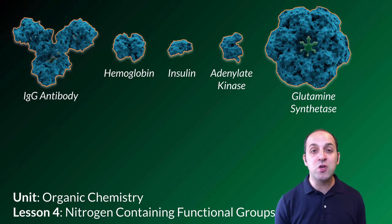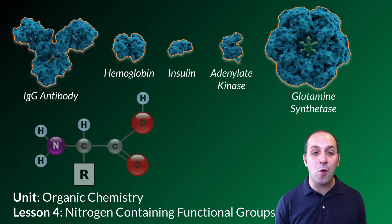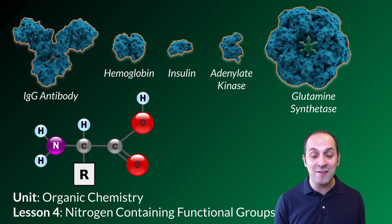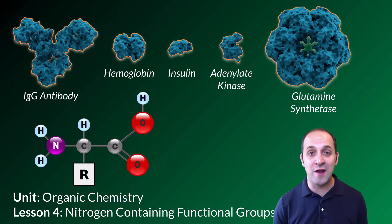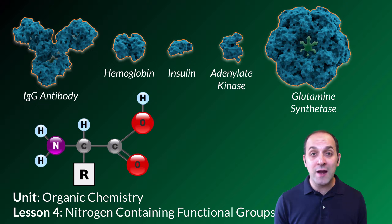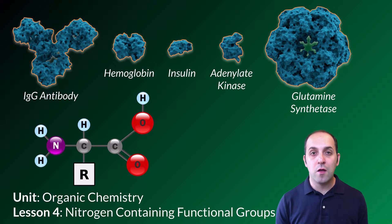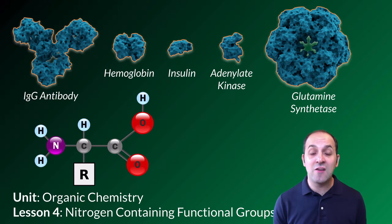The reason I'm showing you all of these is because proteins are made out of amino acids, and amino acids have this fundamental structure. You can see over on the left we've got a nitrogen atom. Amino acids are organic molecules that have nitrogen-containing functional groups. Let's go in and talk about nitrogen and its role in organic chemistry.